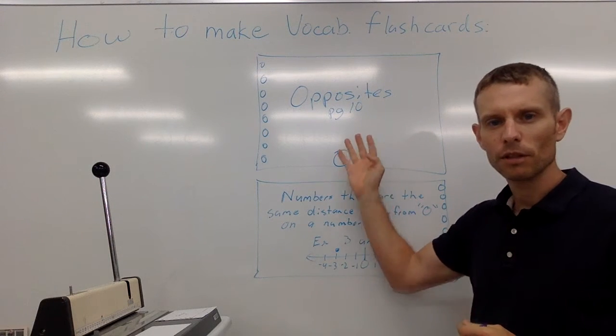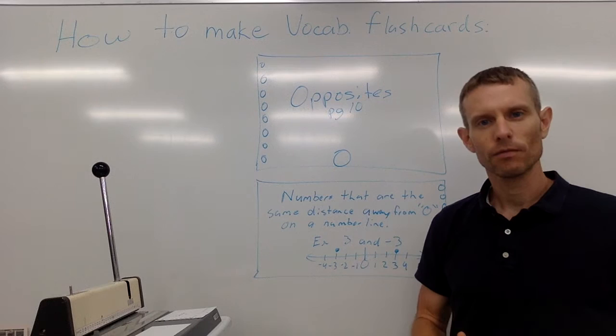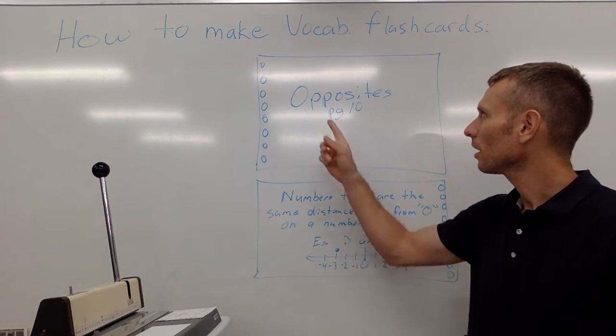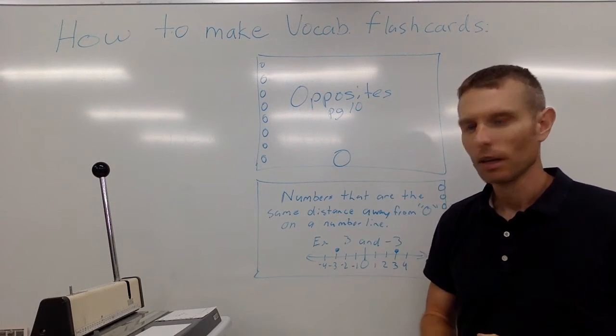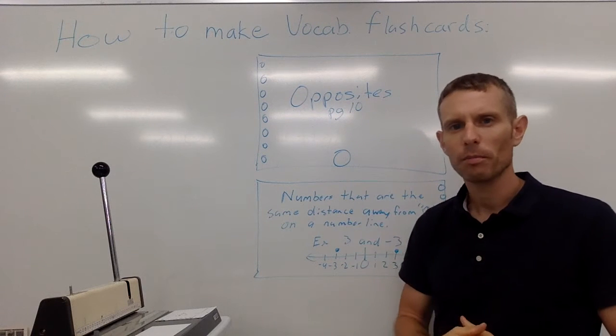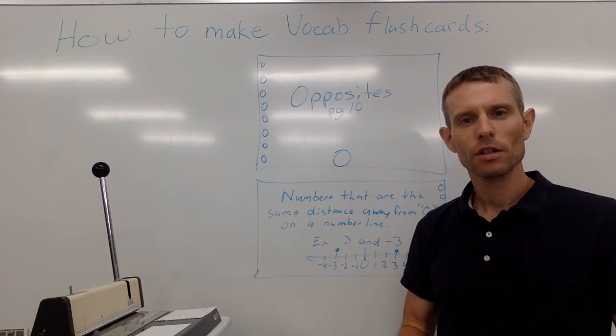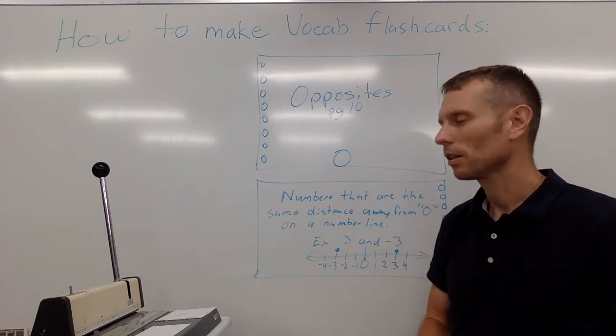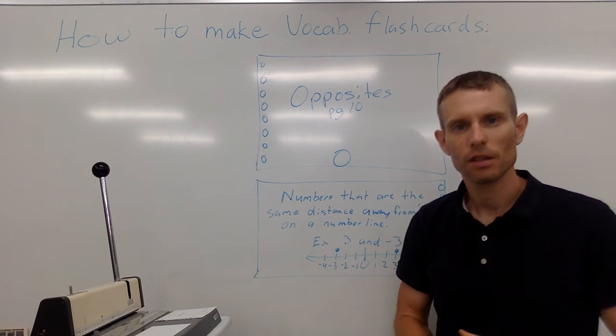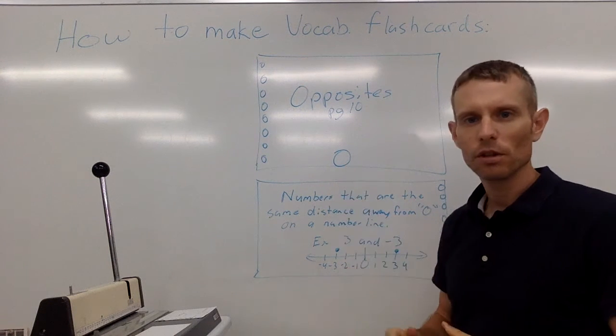So here I have what the front of the flashcard would look like. It has the word and then I went ahead and wrote the page number where the definition was found or where they talked about it in the textbook. That's kind of easy in case you want some more examples. At the bottom you'll notice